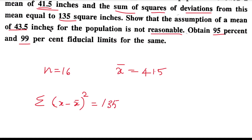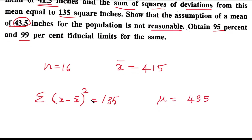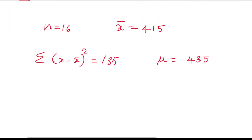The assumption is that the population mean is 43.5 inches. Next, we write H₀ and H₁ values. H₀ is the null hypothesis. Null hypothesis means there is no significant difference. That is, population mean μ = 43.5.